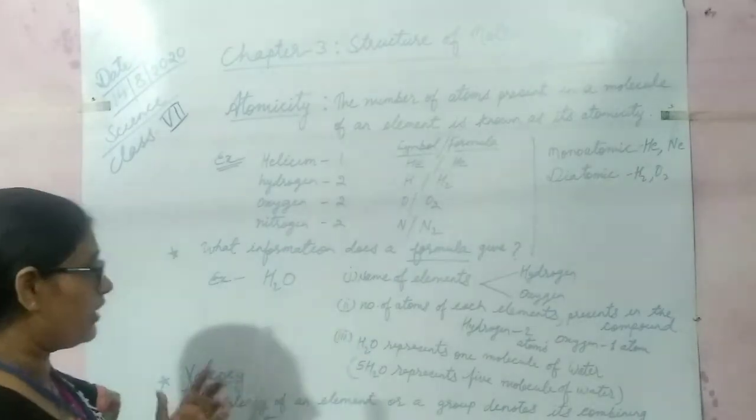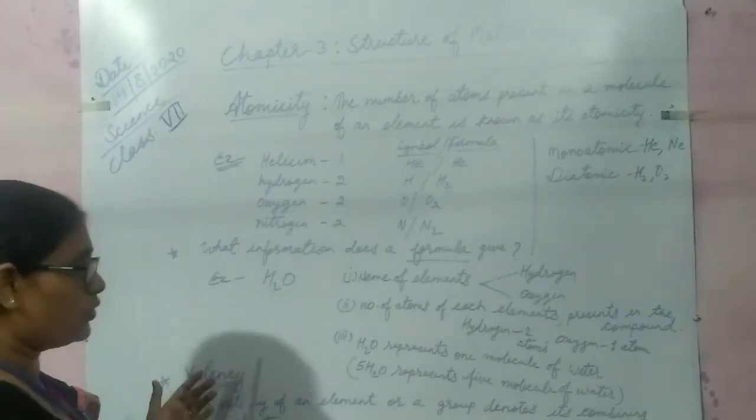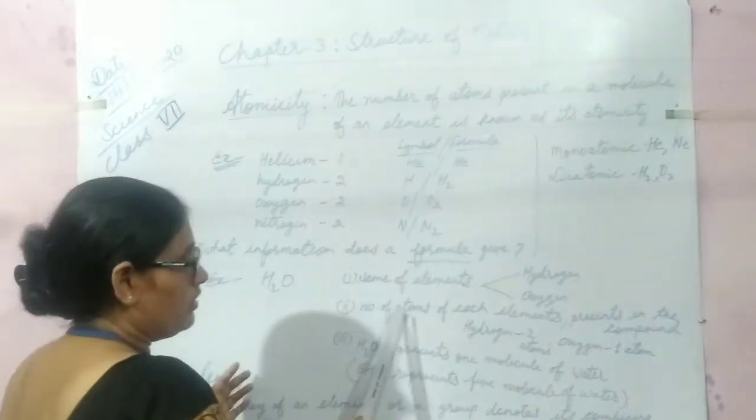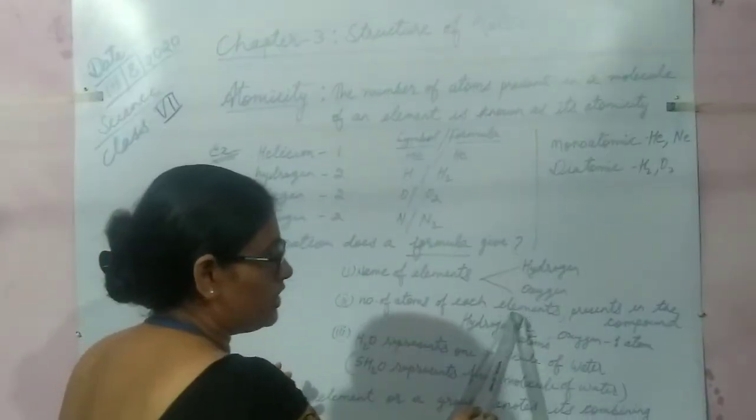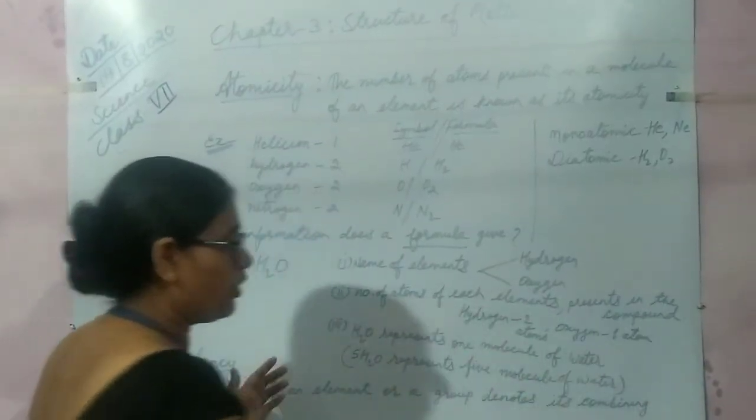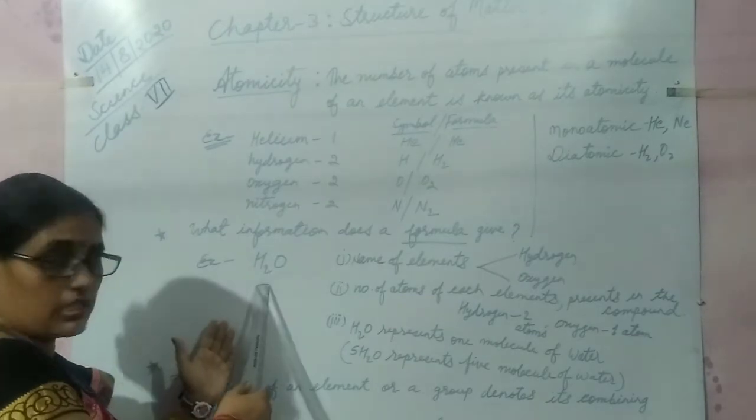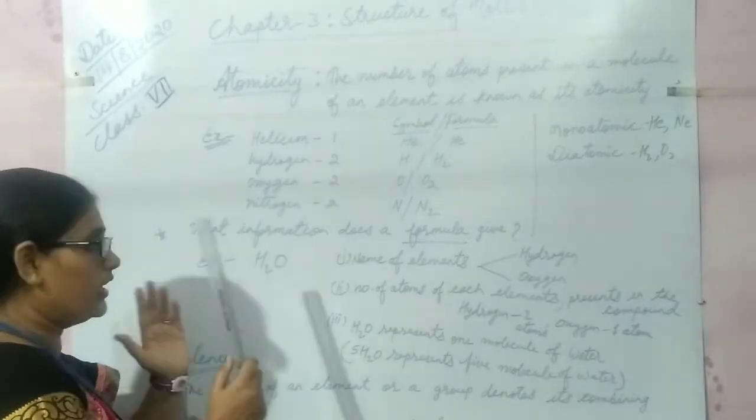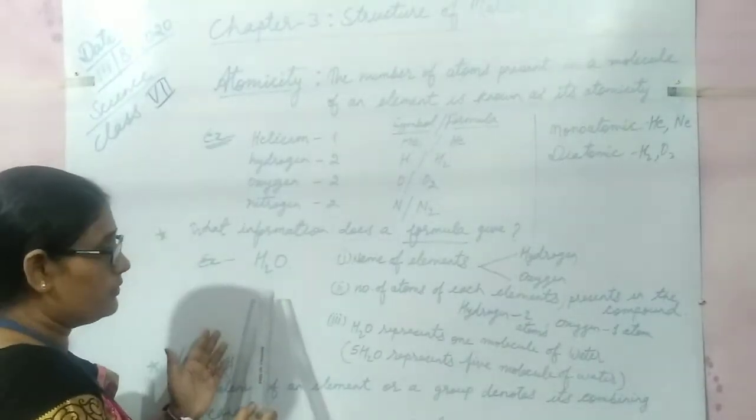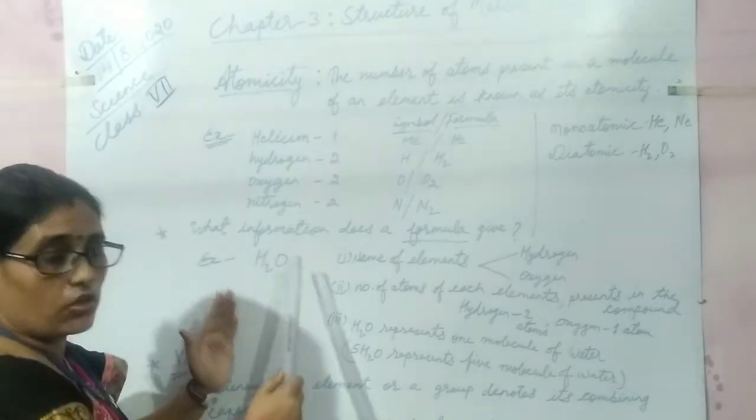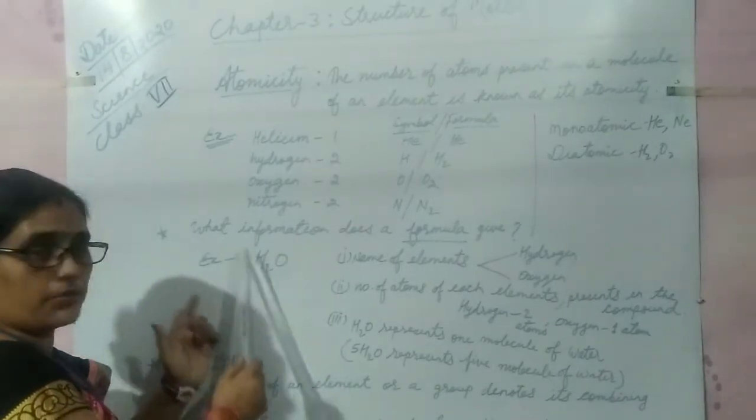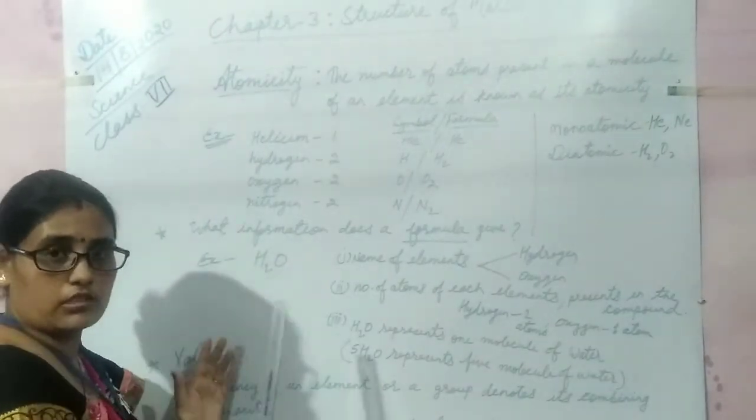The second information we get from this formula H2O is the number of atoms of each element present in the compound. Just by looking at the formula H2O, we can say that it contains two elements, hydrogen and oxygen, and there are two atoms of hydrogen and one atom of oxygen.